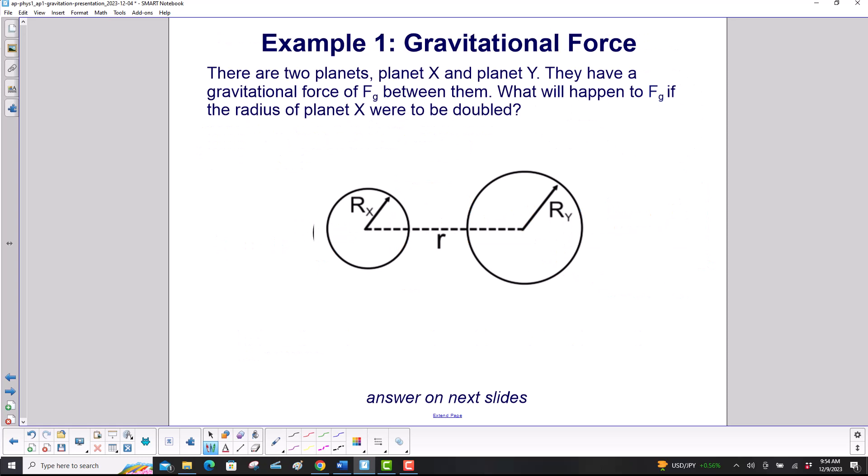There are two planets, planet X and planet Y. They have a gravitational force of F_g between them. What will happen to F_g if the radius of planet X were to be doubled?